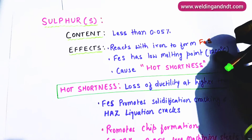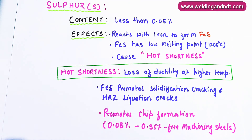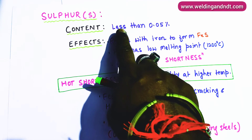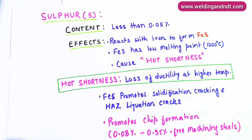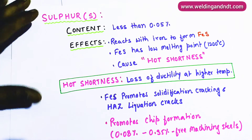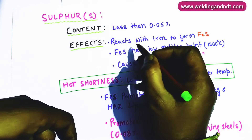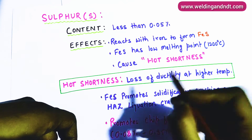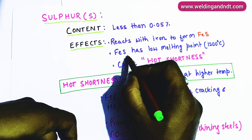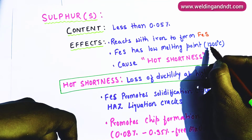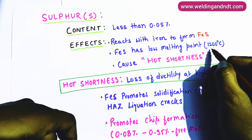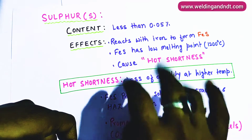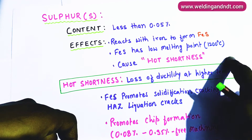The second alloying element is sulfur. Sulfur is present in a very small amount — less than 0.05 percent in steel. Sulfur reacts with iron and forms FeS, and the major drawback of FeS is that it has a very low melting point — around 1200 degrees Celsius compared to steel — and this low melting point causes hot shortness in steel.